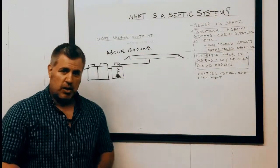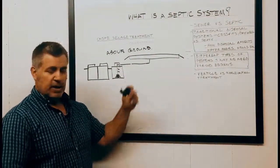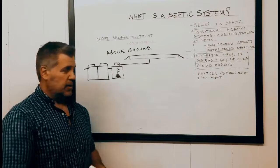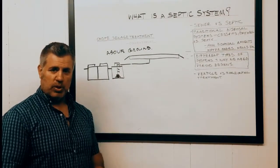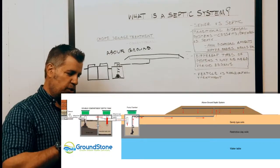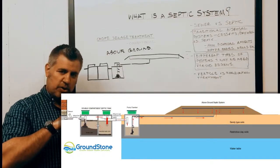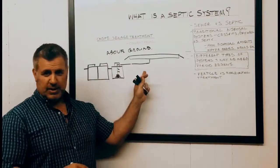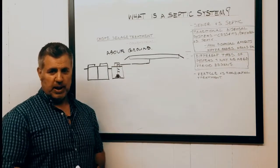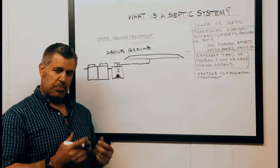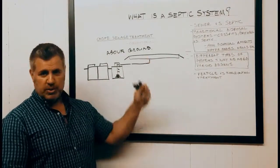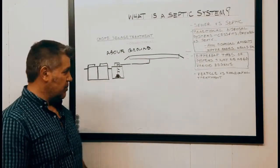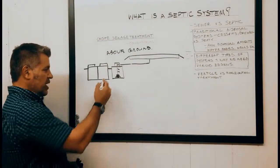Our next system type is an above ground system. These types of systems are required if we have a limiting layer, whether it be clay or silty soils, or if we have a high water table. To create a constructed vertical distance from either that restrictive layer or from that high water table, we're going to need to build a system above the ground. This can be either a raised bed or a sand mound.